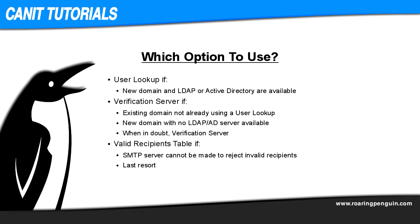We know what recipient verification is, we know why we need it, and we know how it works. Now, how do we decide which option to use for our domain? If our existing domain already has a user lookup that includes recipient verification, that's great. If we're setting up a new domain and there's an LDAP or Active Directory server available, we should use it. Otherwise, or if we already have an existing domain that's already set up, we should use a verification server. We don't want to set up a new user lookup because that will probably change the stream names around. Finally, we should use the valid recipients table as a last resort, keeping in mind that we'll need to keep the table up to date as new recipients are added to our domain and old ones leave, and that if we have multiple domains using the CANET server, then either the default stream should not be used for the table, or all addresses in all domains must be put into the table.